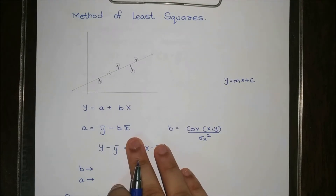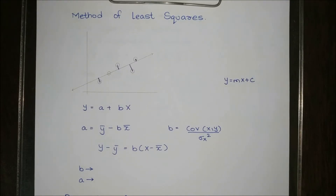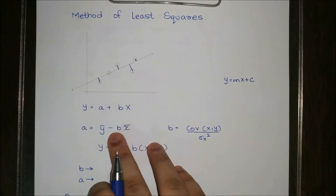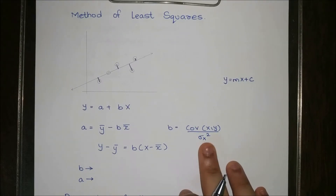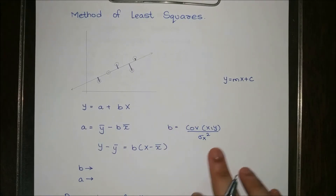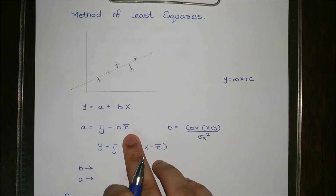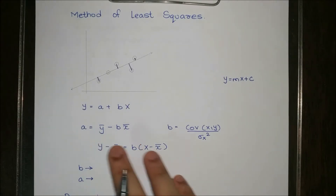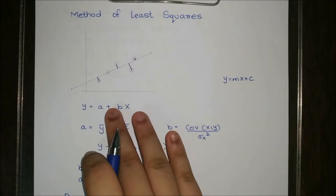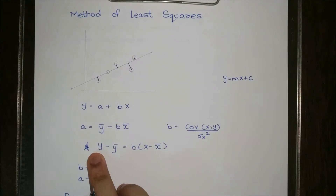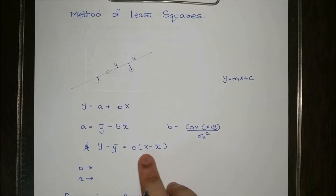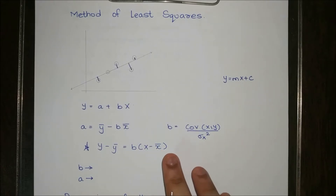y-bar and x-bar are the means — add up the x and y values and divide by the number of values. The formula for b is: covariance of x and y divided by variance of x. So this is the formula for b and this is the formula for a. Instead of separately finding a, we often use the line equation directly: y minus y-bar = b times (x minus x-bar). This is called the regression line.